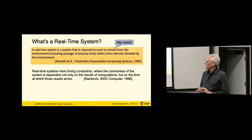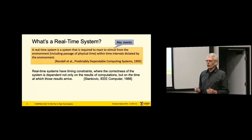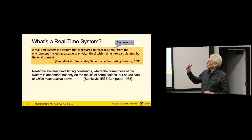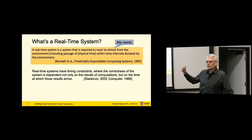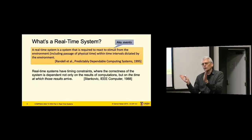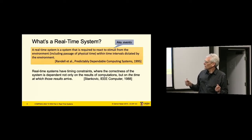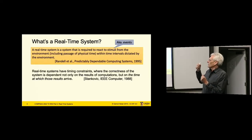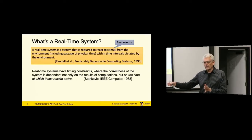Another definition going back earlier — Jack Sankovic is one of the gods of real-time systems: real-time systems have timing constraints where the correctness of the system is dependent not only on the results of computation, but also on the time at which those results arrive. This separates two aspects of correctness: functional correctness, which he expresses here as the results of the computation, and then temporal correctness — delivering them by a certain time.